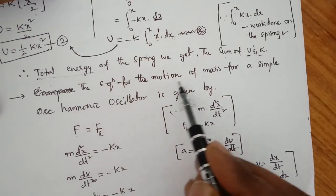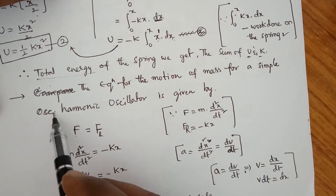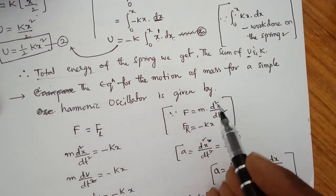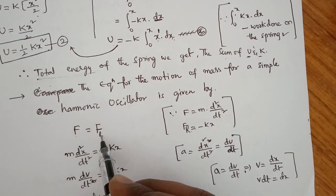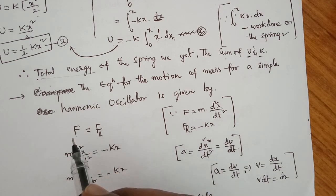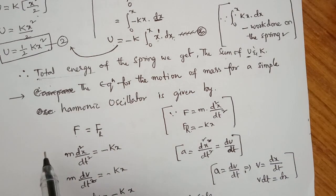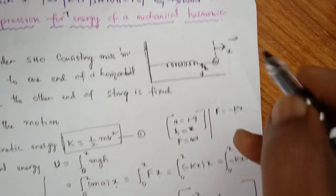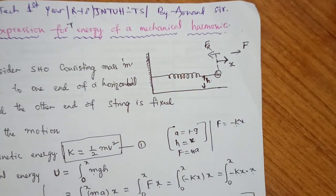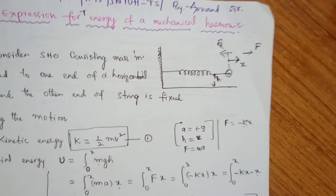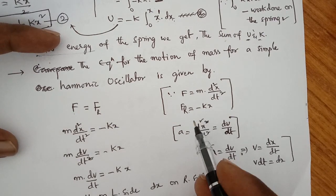The equation for the motion of a mass for a simple harmonic oscillator: the restoring force FR is always equal and opposite to the external force applied on it. So F equals the restoring force FR in the negative direction.